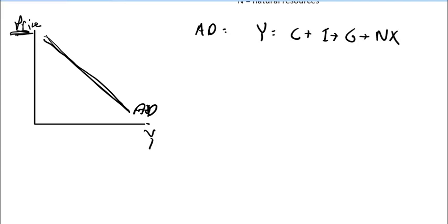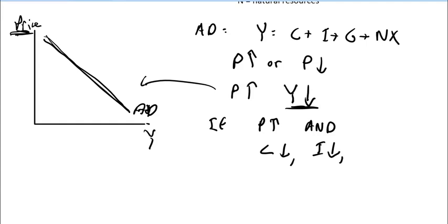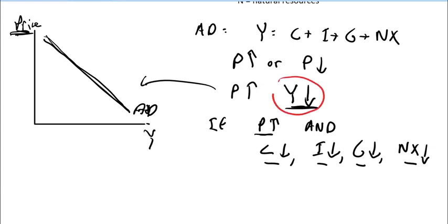Since my Y-axis is price, we have to see what happens if price increases or decreases. If price increases, aggregate demand says that Y should decrease, or vice versa — if price decreases, Y should increase. Y will only decrease for sure if price increases and C decreases, I decreases, G decreases, and also net exports decrease. So if an increase in price makes all these different components of aggregate demand decrease, then we can say for sure that Y will also decrease.